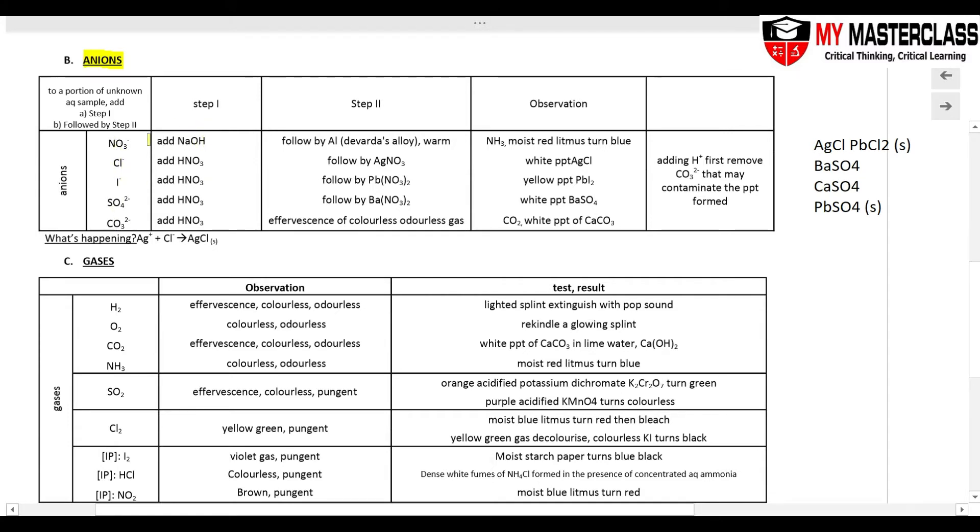In step one, I add nitrate. I add NaOH. Whenever I add NaOH to aluminum powder, or we also call it Devarda's alloy, I will get NH3 gas formed. So there are two conditions where NH3 gas is formed. Number one, when I have NO3- plus NaOH plus aluminum powder, this is a redox reaction. I will form NH3 gas.